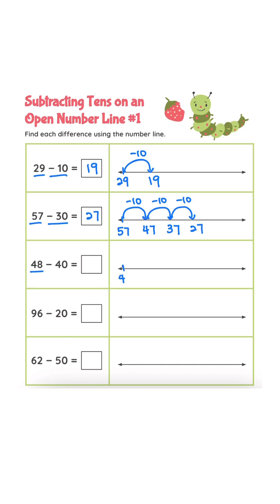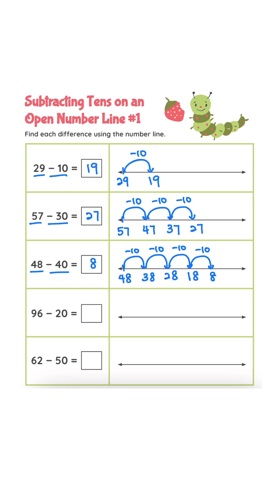48 minus 40. 48 minus 10 is 38. 38 minus 10 is 28. 28 minus 10 is 18. 18 minus 10 is 8. Answer is 8.